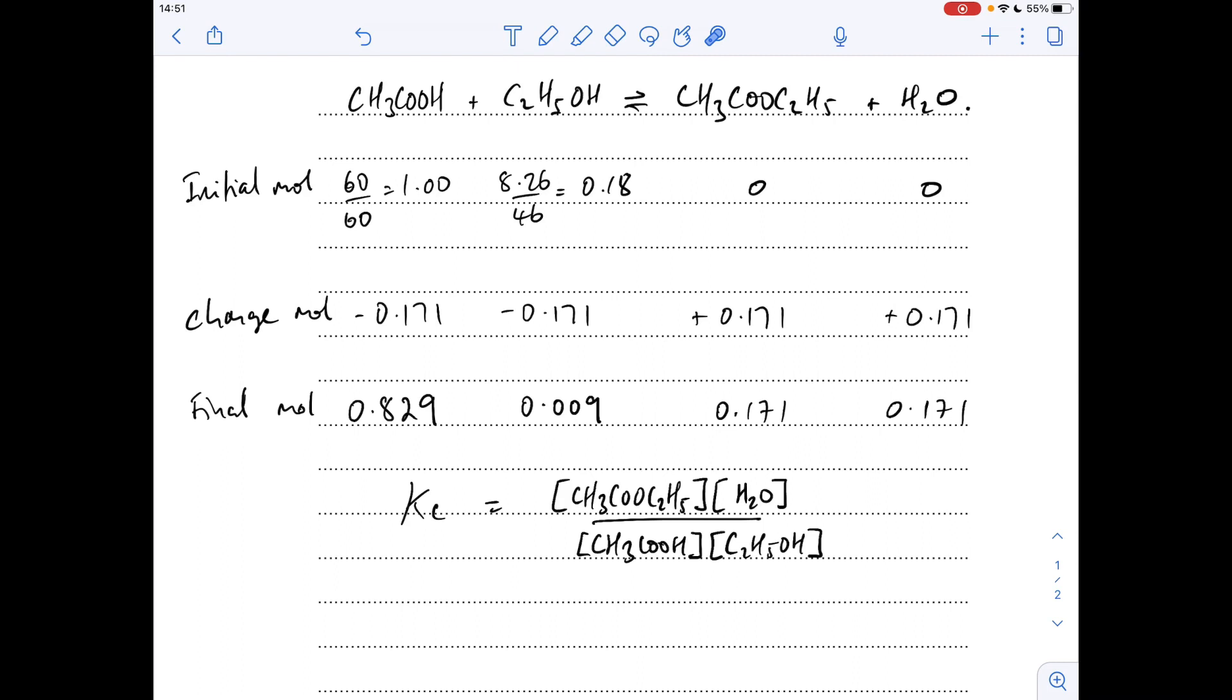The expression for the equilibrium constant Kc is the equilibrium concentration of the products, so ester and water, over the reactants. There's no powers to put in because everything's got a 1 in front of it in the balanced equation. Technically these are the moles, but because everything's in the same volume, the mole ratio is the same as the concentration ratio, so we can just put the moles in here.